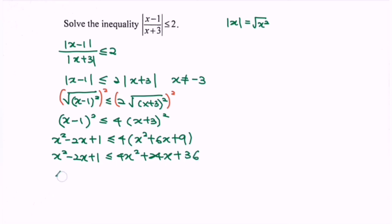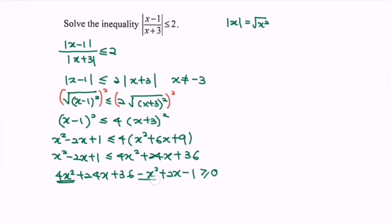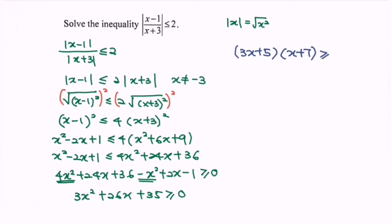Rewrite the situation: 4x squared plus 24x plus 36 minus x squared plus 2x minus 1 greater than or equals to 0. Simplifying: 3x squared plus 26x plus 35 greater than or equals to 0. Factorizing gives us 3x plus 5 multiplied with x plus 7 greater than or equals to 0. This is the simplest form.